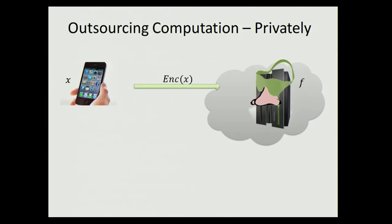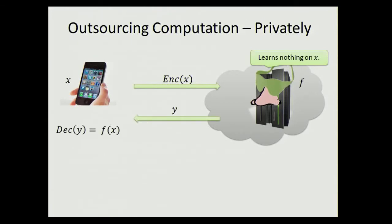Instead of sending our input in the clear, we're going to encrypt it and send it to the server. This will guarantee, just by the security of the encryption scheme, that the server learns nothing about the input. But that kind of defies the purpose, because how is the server going to compute F of X if it doesn't even know X?